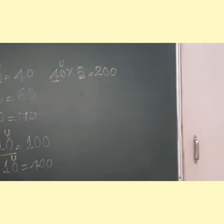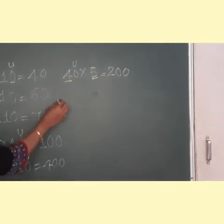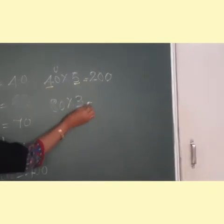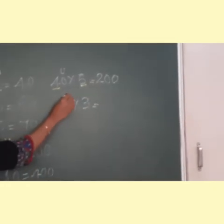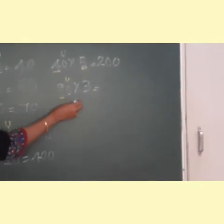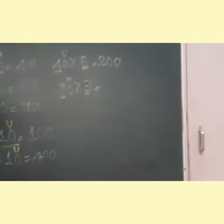If I say 80 multiplied by 3, so here children, what are you going to do? You have 0 in the unit space. Then you have 8 and 3. You are going to say the table of 8 up till 3.